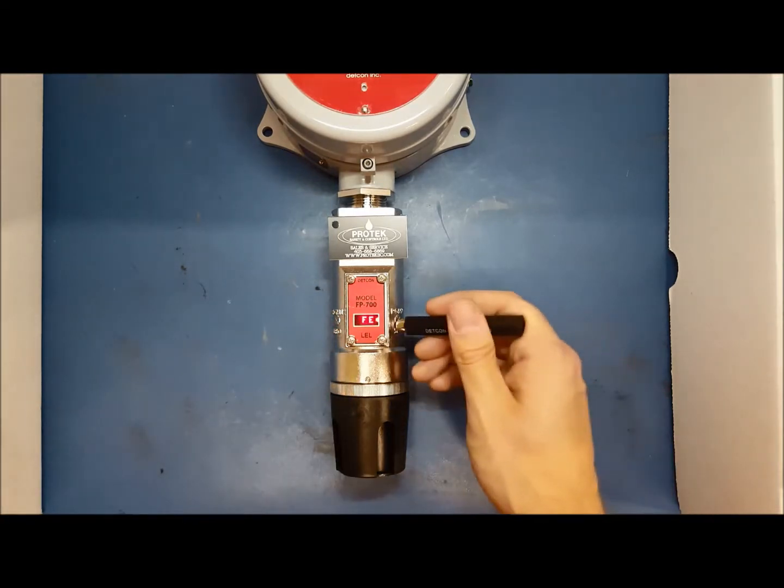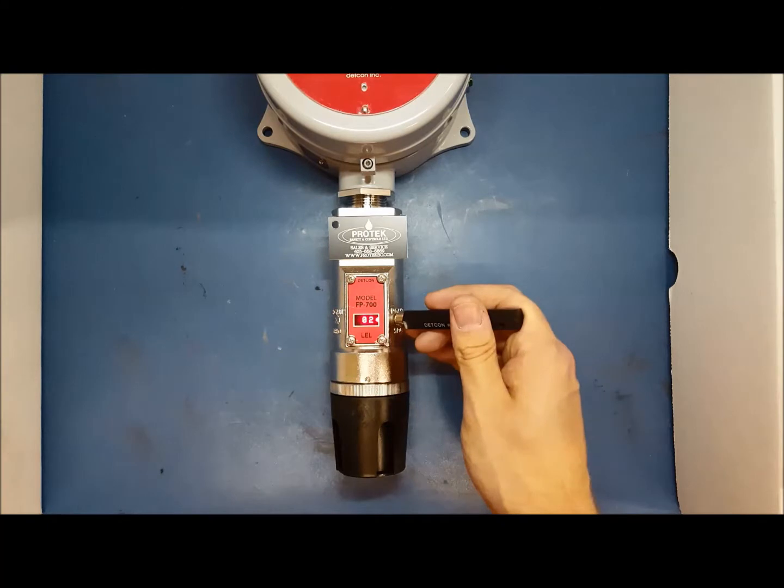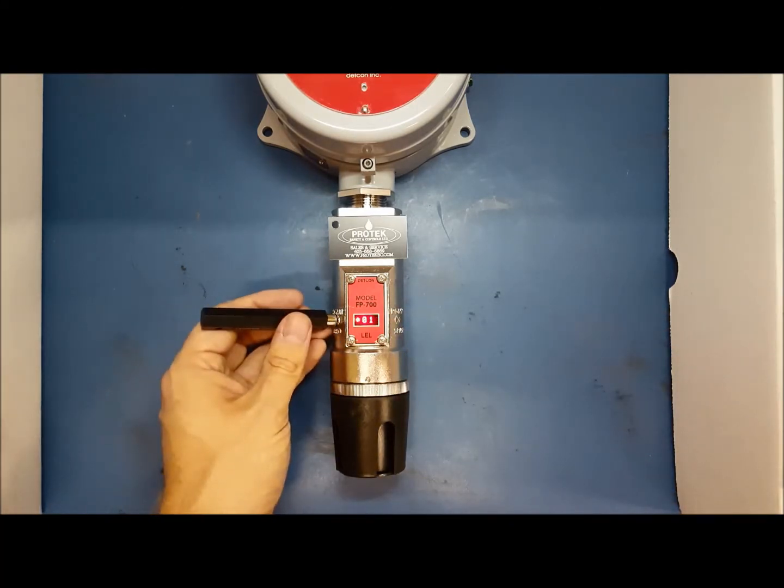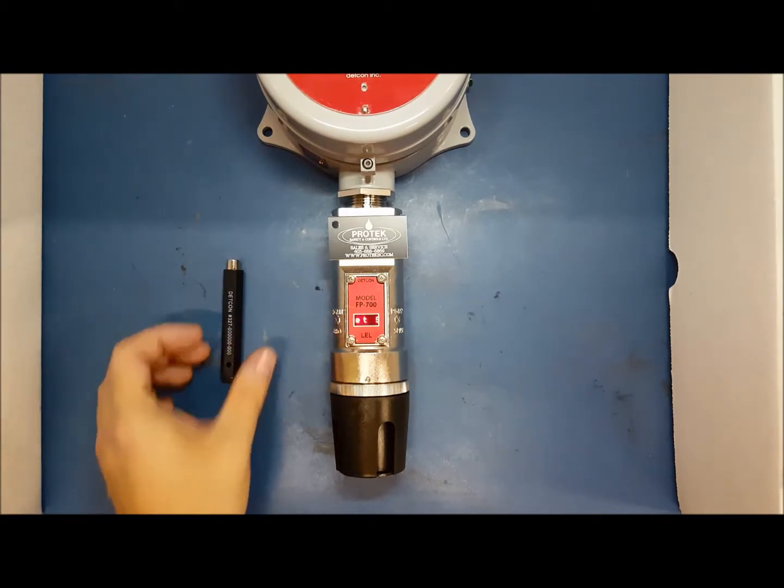Using your magnet, flick over PGM2 to increase the number and flick over PGM1 to decrease the number. Once you have the ID number that you need, hold the magnet over PGM1 until the display reads ID Saved.